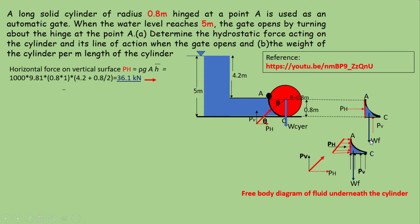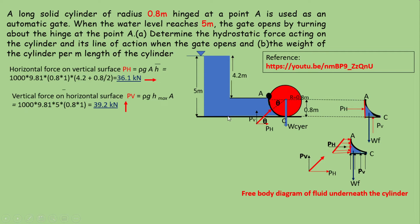The vertical force acting on the horizontal surface equals the average pressure multiplied by the area. The gate opens when the water level reaches 5 meters, so average pressure equals specific weight × 5 m × area, which equals 39.2 kN. This represents the average pressure times the area, and it is acting in the upward direction.